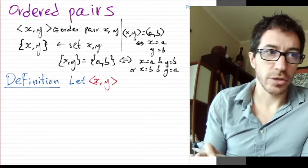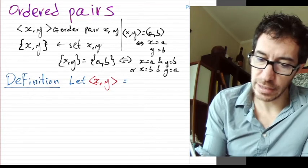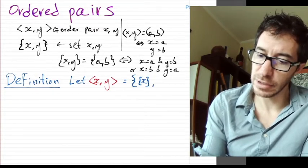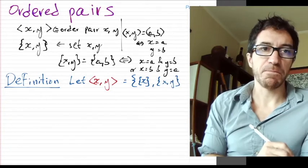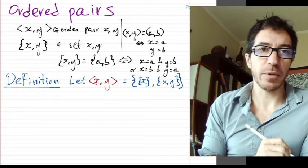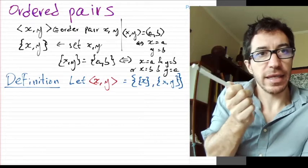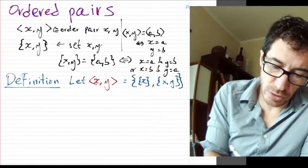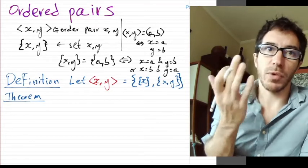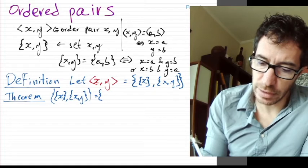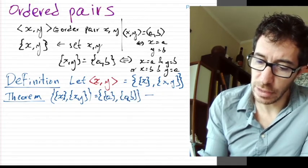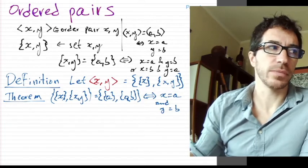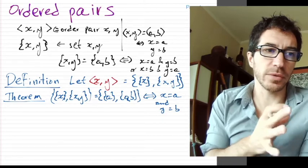Here is the definition. We define the pair (x, y) to be the set that contains two sets: the first is a singleton containing only x, and the second is the set {x, y}. That's how we define a pair — that funny set is going to represent the pair. For it to represent the pair, we need to show it satisfies what we want: the pair (x, y) equals the pair (a, b) if and only if x equals a and y equals b. We want them to be equal exactly when the first components are equal and the second components are equal.